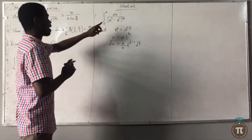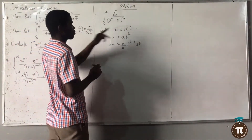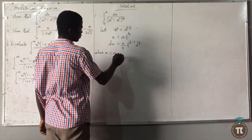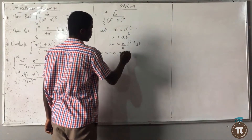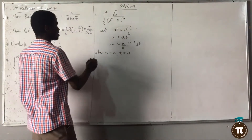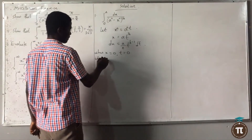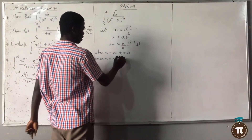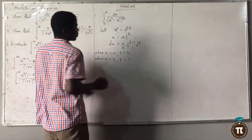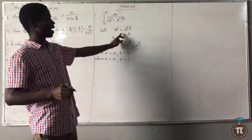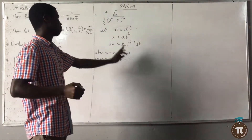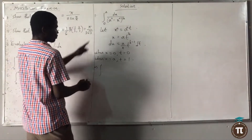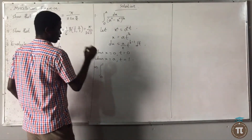When s is 0, t will be 0. When s is a, then a^n equals a^n·t, so t will be 1. So the integral will now become an integral from 0 to 1.